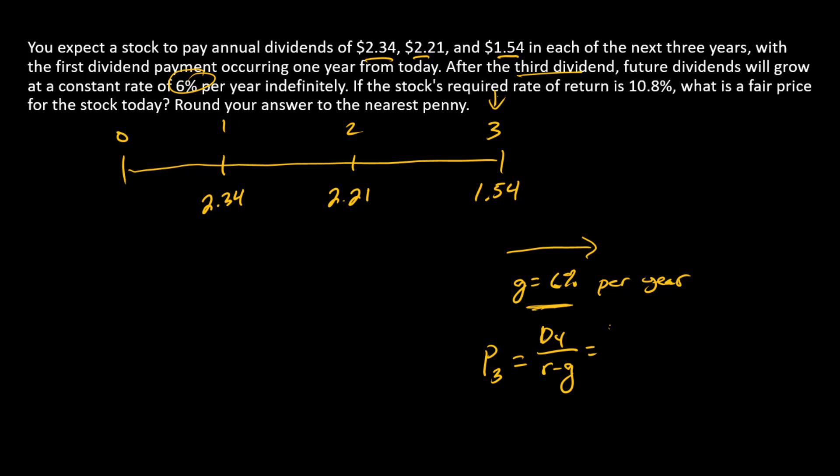D4 is going to be D3 times 1 plus G. We can take care of the numerator and insert numbers now: 154 times 1.06 divided by 0.108, so that's R, minus 0.06, that's the constant growth. What's P3? P3 is equal to 34.0083.